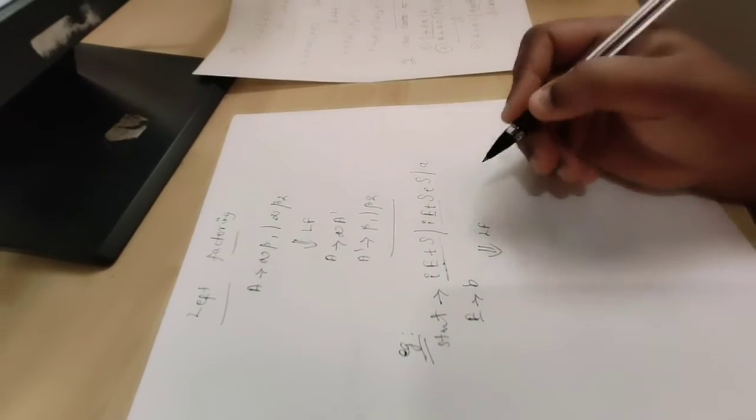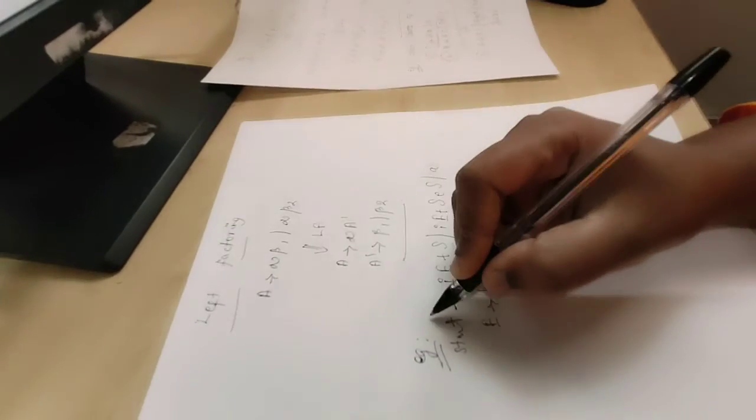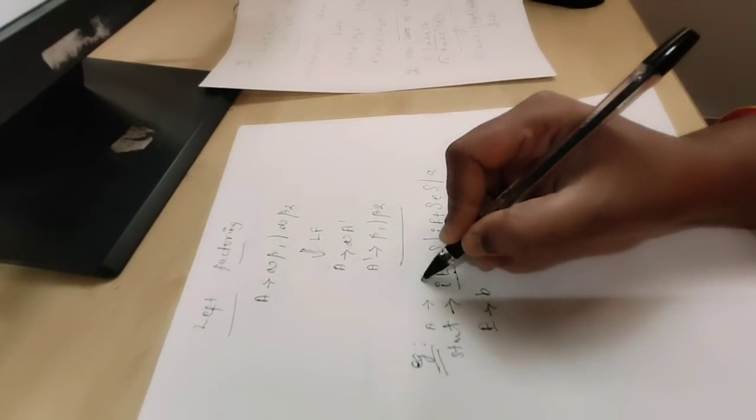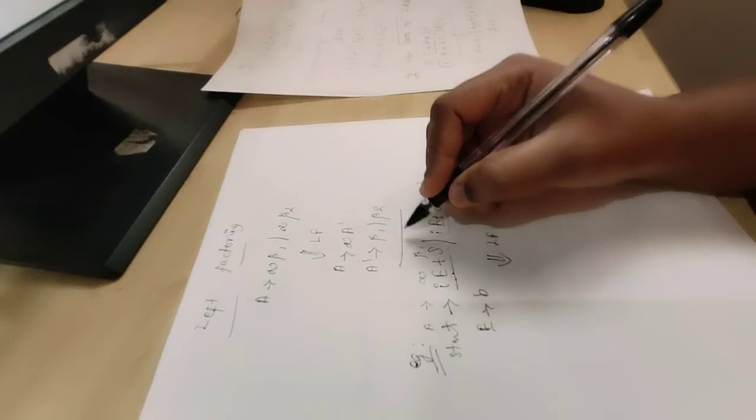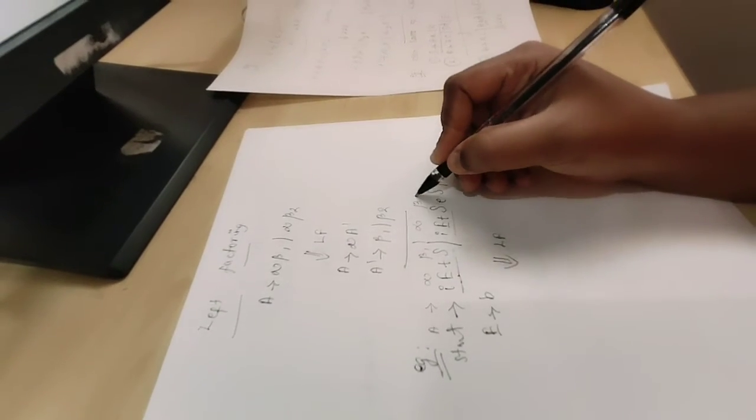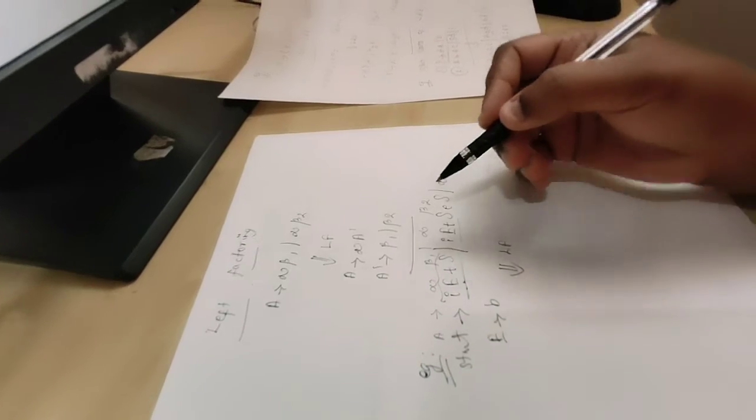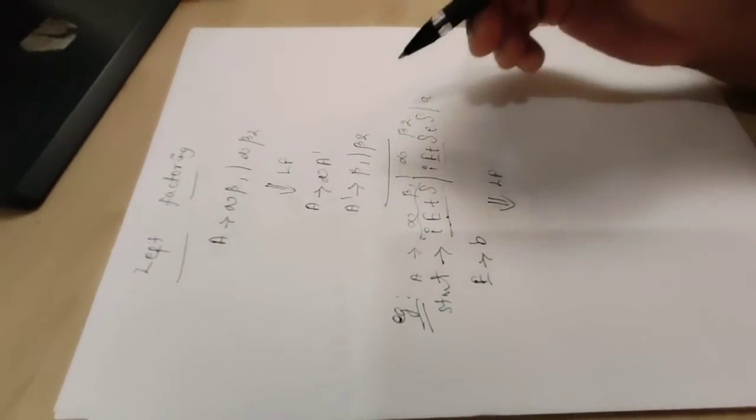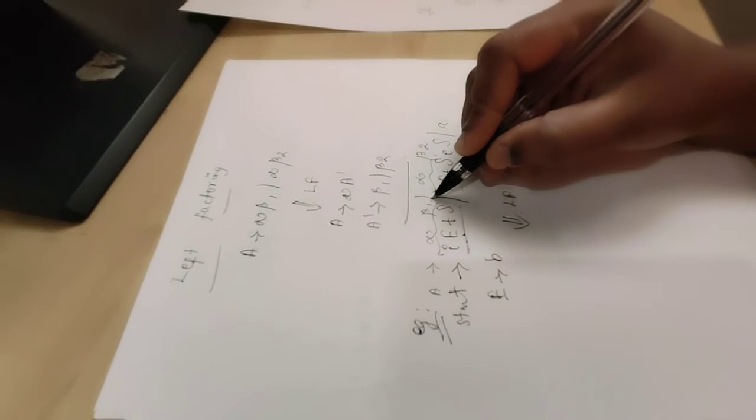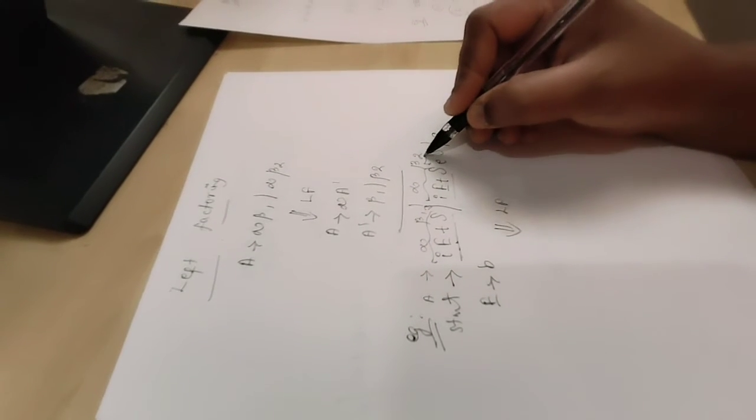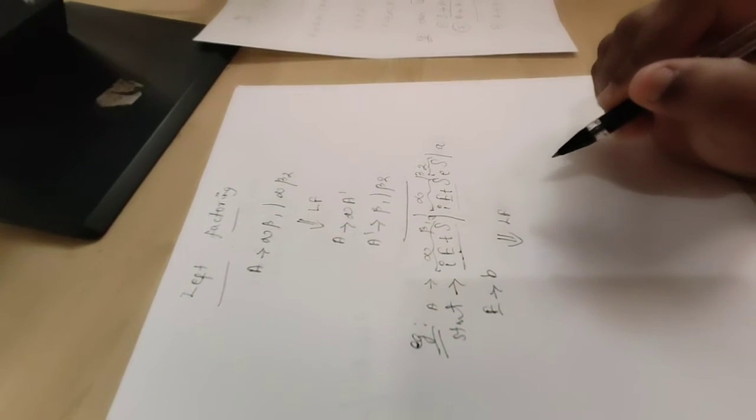Left factoring when we apply is of the form A produces alpha beta 1 or alpha beta 2. Here, alpha is if expression then statement. Beta 1 is epsilon, and beta 2 is else statement.